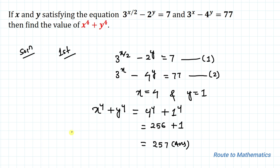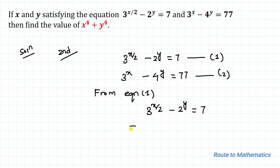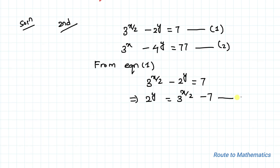Now let's start the second method, which is the substitution method — the normal way to solve this type of equation. From equation 1, 3^(x/2) − 2^y = 7, we isolate: 2^y = 3^(x/2) − 7. Call this equation A.